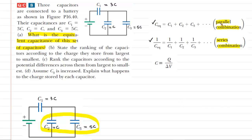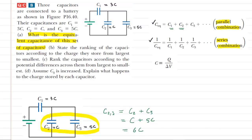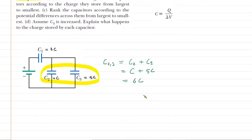We're going to follow the parallel combination formula, which simply tells us to add the capacitance values together. So for these two, which we might call C2,3, we're simply going to add their capacitances: C2 equals C and C3 equals 5C. Together they make an equivalent capacitor whose capacitance is equal to 6C.